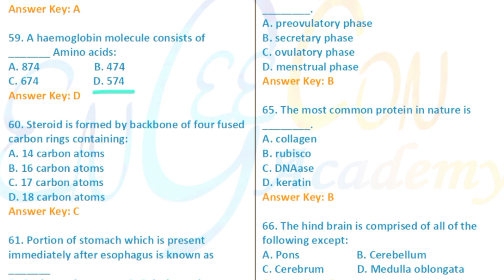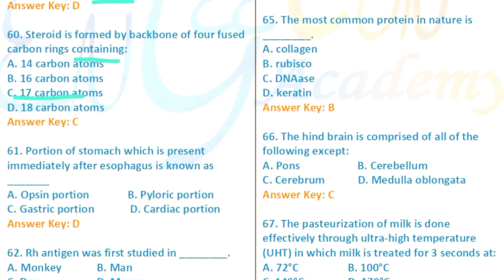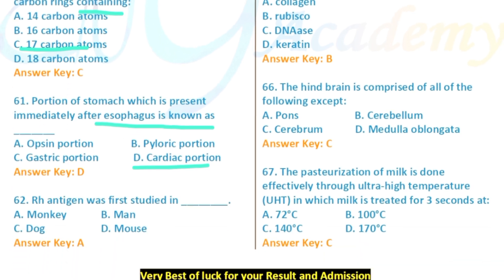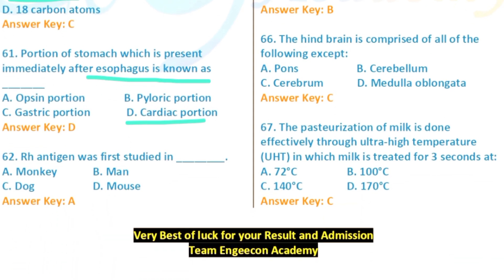Question 59: The hemoglobin molecule consists of four subunits (4 heme + 4 globin chains). Question 60: Steroids are formed by a backbone of four fused carbon rings containing 17 carbon atoms. Question 61: The portion of the stomach immediately after the esophagus is the cardiac portion.